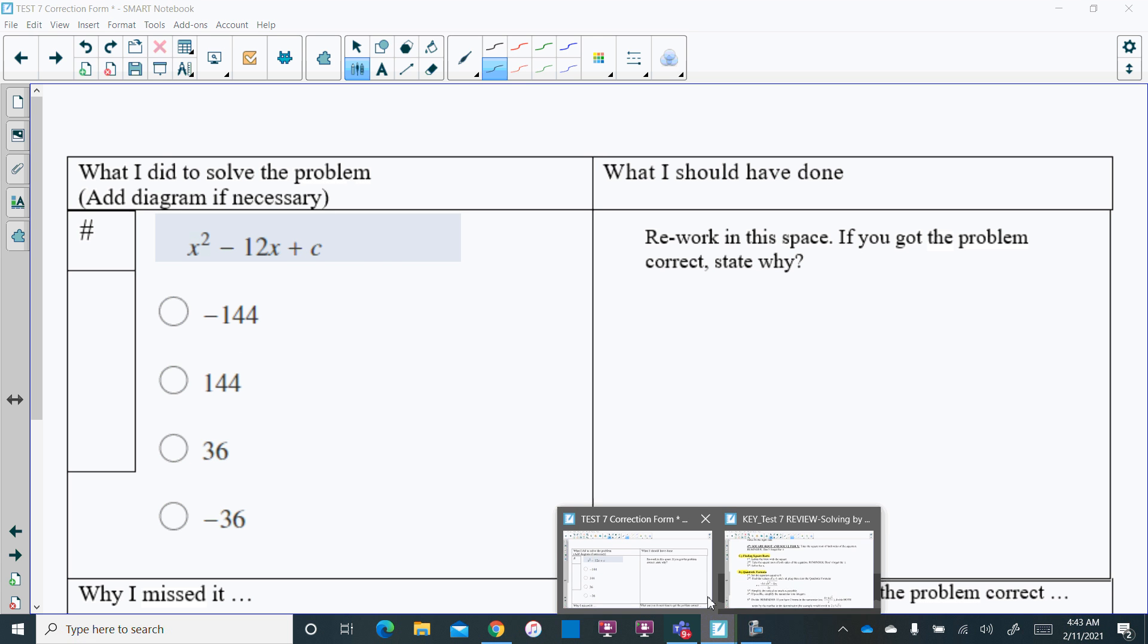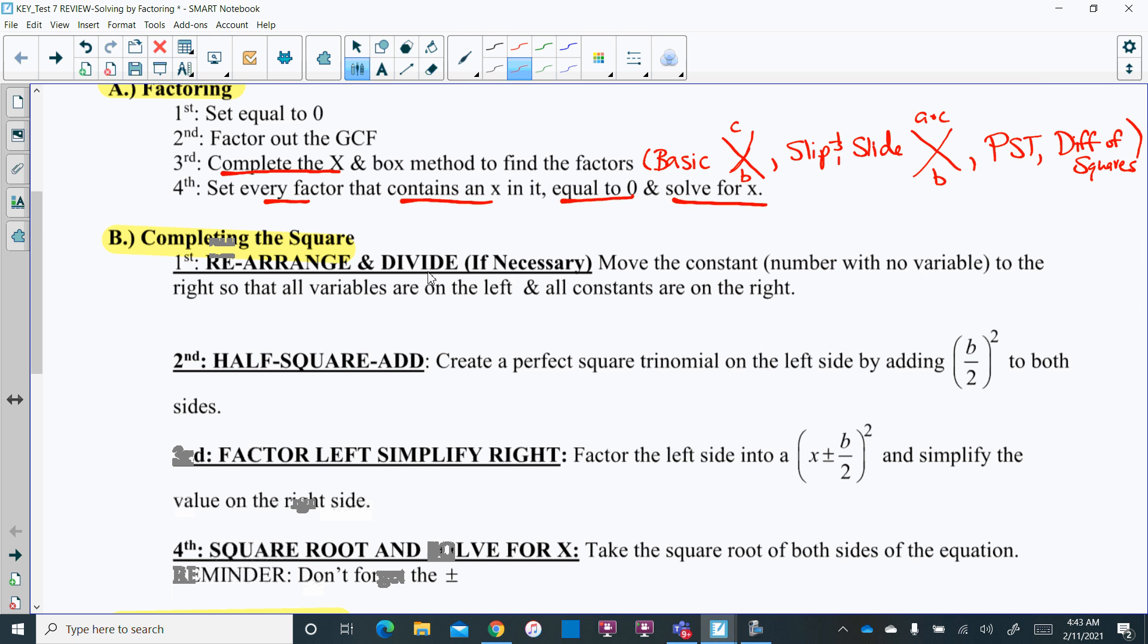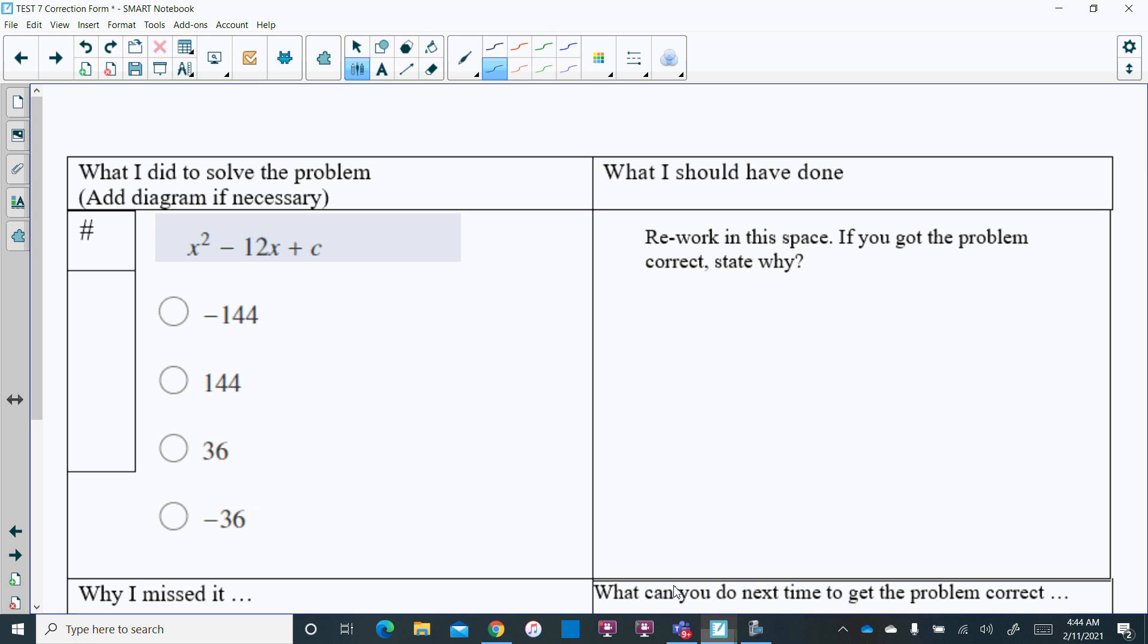If you weren't too sure, here's that summary again. For completing the square, we had to rearrange and divide if necessary, make sure we understand how to do the half-square-add, factor and simplify the right side, and take the square root. But on problems five through seven, we were just talking about the first two steps and understanding that for completing the square it has to be a perfect square trinomial.